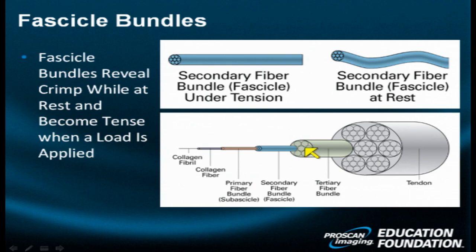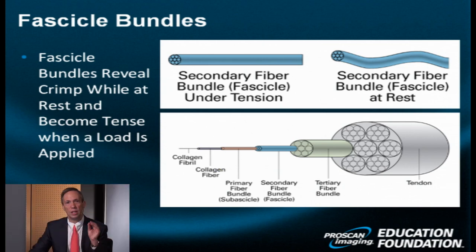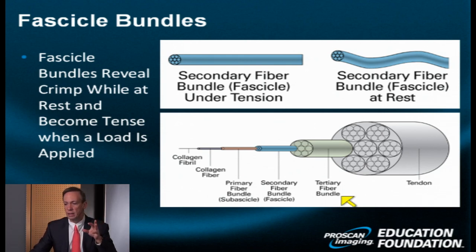Beyond the fascicles are primary bundles — sub-fascicles. The sub-fascicle level can be seen using MR microscopy imaging, that is, very high-resolution MRI. For standard MRI, you'll be able to see the tertiary bundle and the secondary bundle. At the microscopic level you can see collagen fibers under a microscope, and then collagen fibrils.